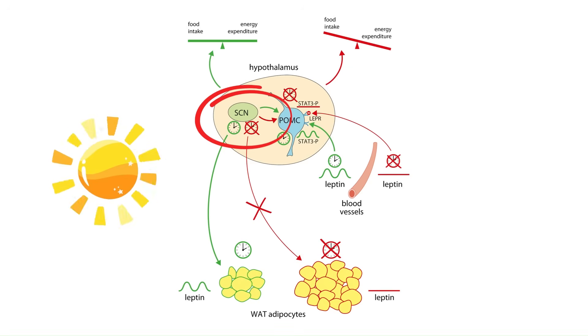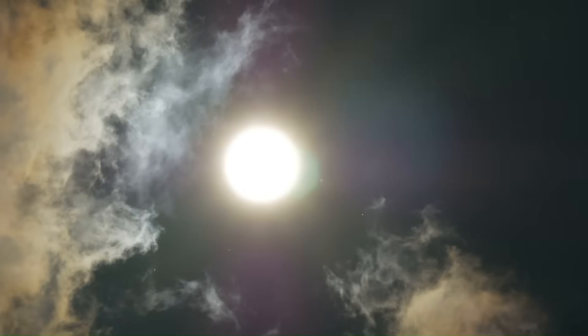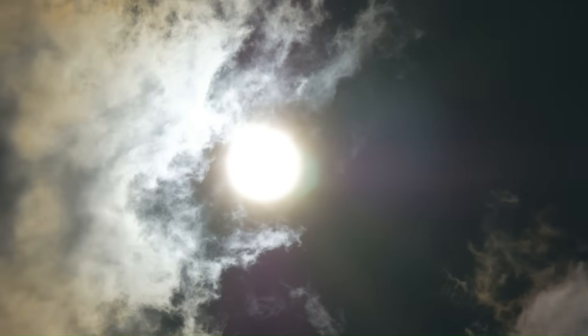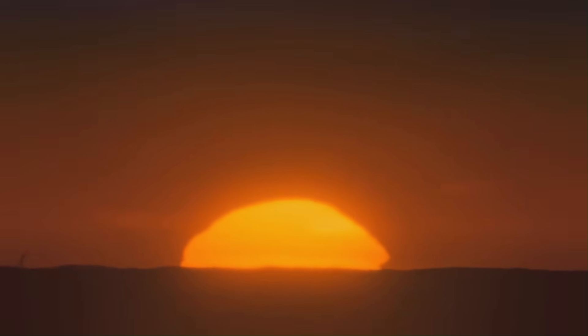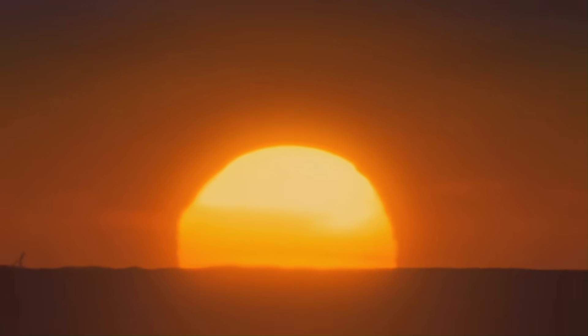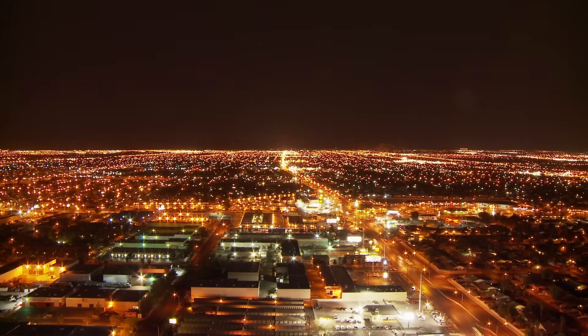Leptin signaling is also controlled by the circadian rhythm, so a messed-up circadian rhythm disrupts kisspeptin and testosterone through multiple pathways. Fixing your circadian rhythm is really important and will have huge returns. To do that, go outside and get morning sunlight in your eyes — and ideally on your skin — at sunrise, or at least within an hour of waking up. Also go outside at sunset and at least once in the middle of the day.